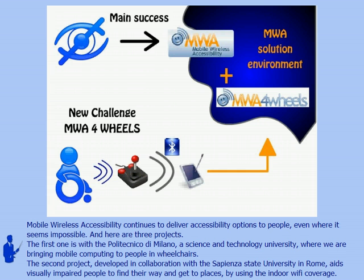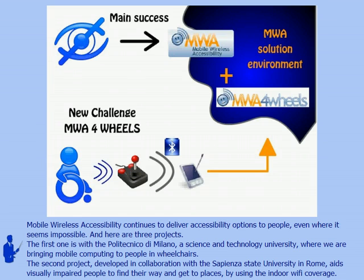Mobile wireless accessibility continues to deliver accessibility options to people, even where it seems impossible. Here are three projects. The first one is with the Politecnico di Milano, a science and technology university where we're bringing mobile computing to people in wheelchairs. The second project, developed in collaboration with the Sapienza State University in Rome, aids visually impaired people to find their way and get to places by using the indoor Wi-Fi coverage.